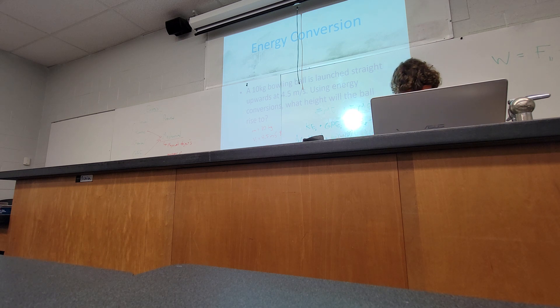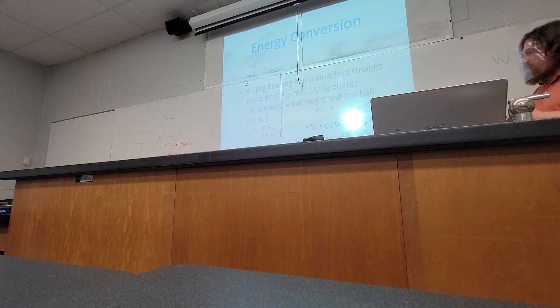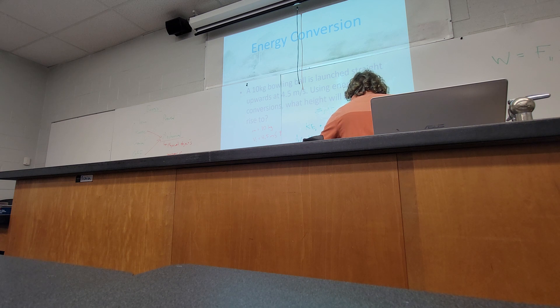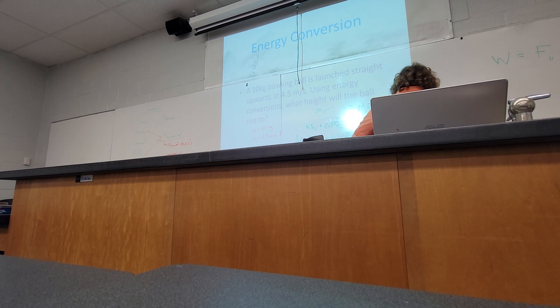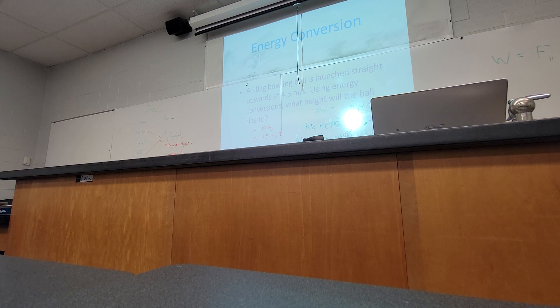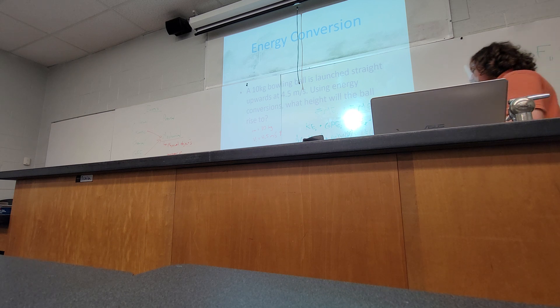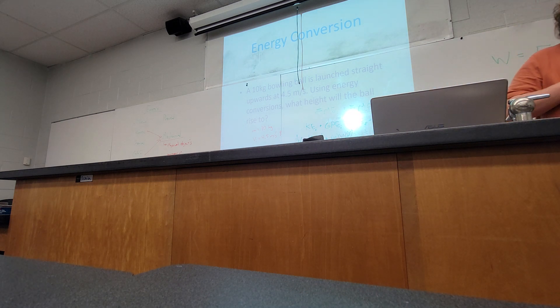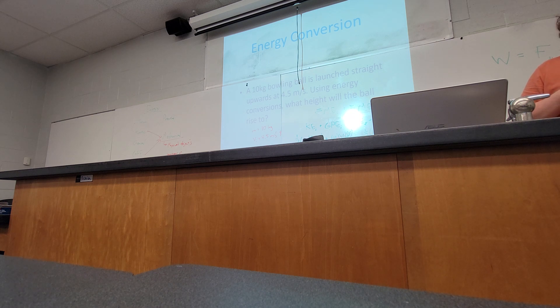To approach our final answer, these two whole things are going to become zero because of zero in each of them. So that's just going to leave us with one-half times 10 times 4.5 squared equals 10 times 9.8 times H. All we have to do is solve for H. I think it's about a meter approximately. Say it again, sir. 1.033. 1.033. Thank you very much. Does anyone disagree with that number? All right.